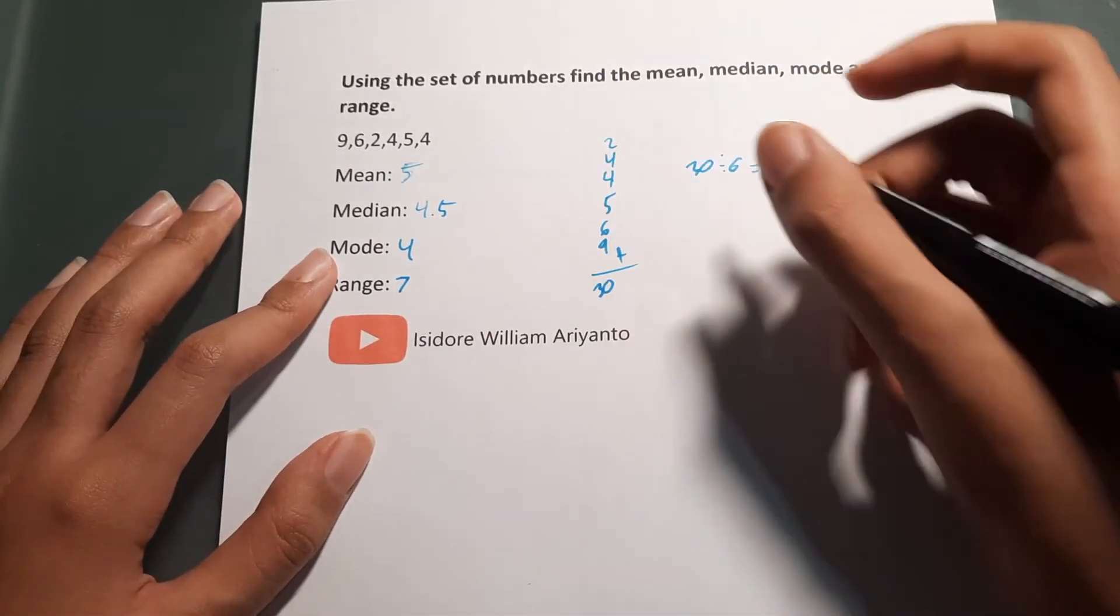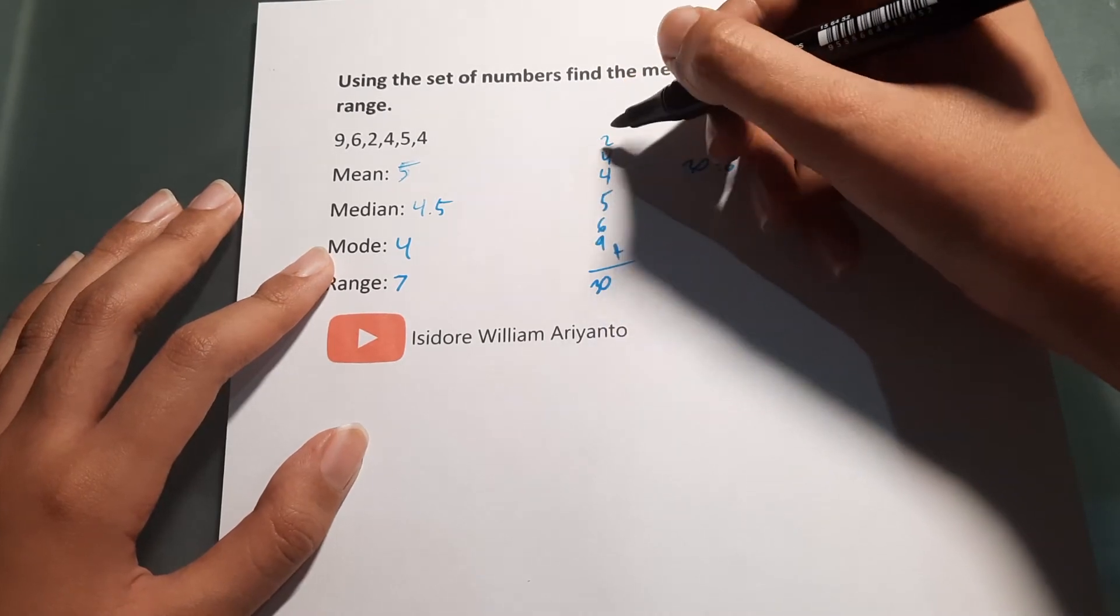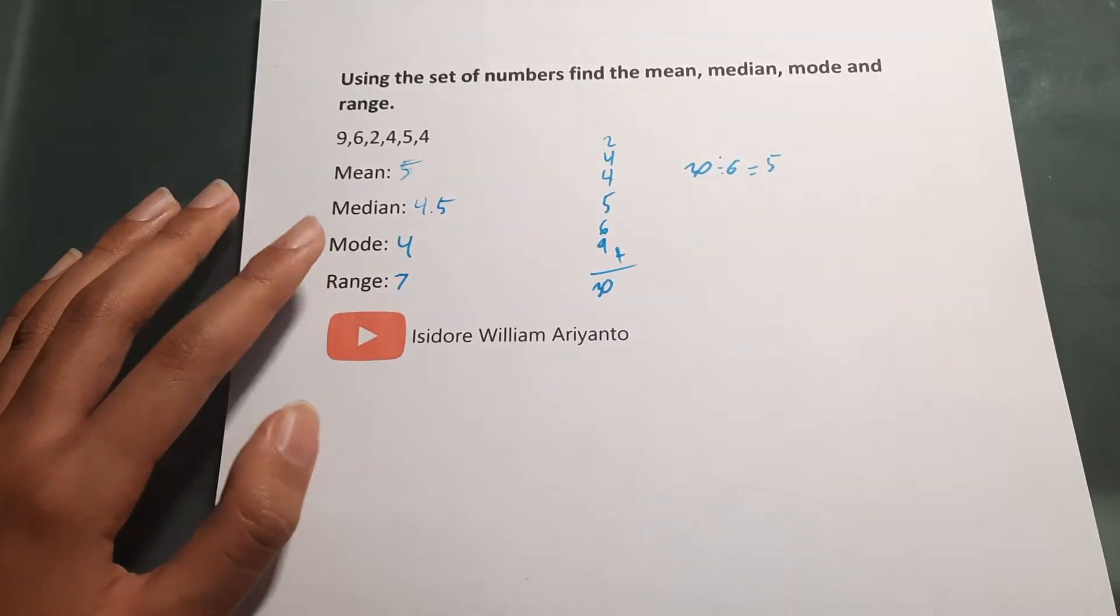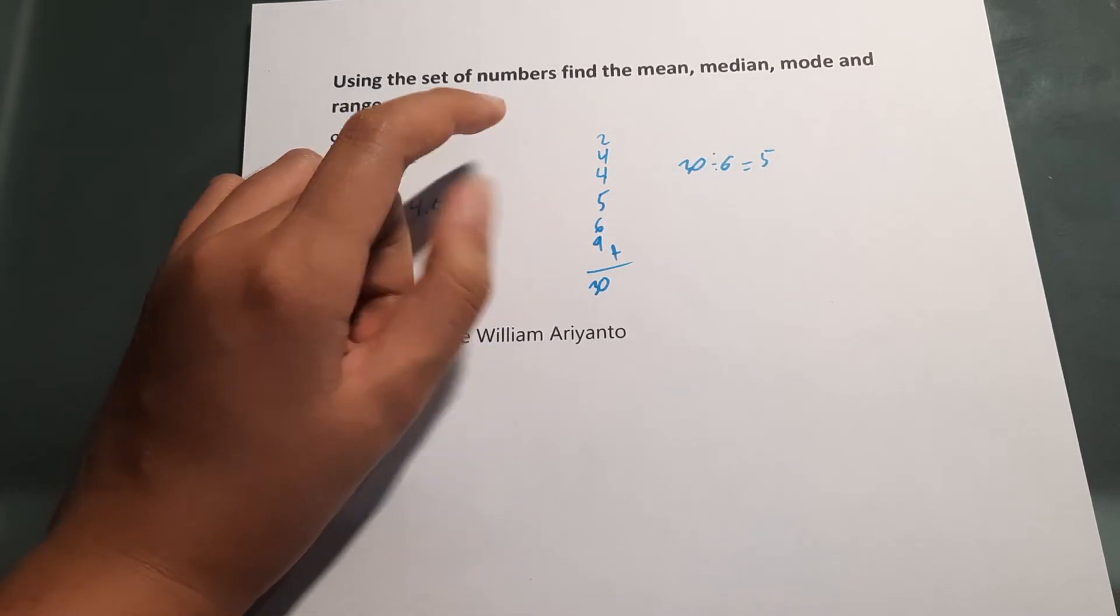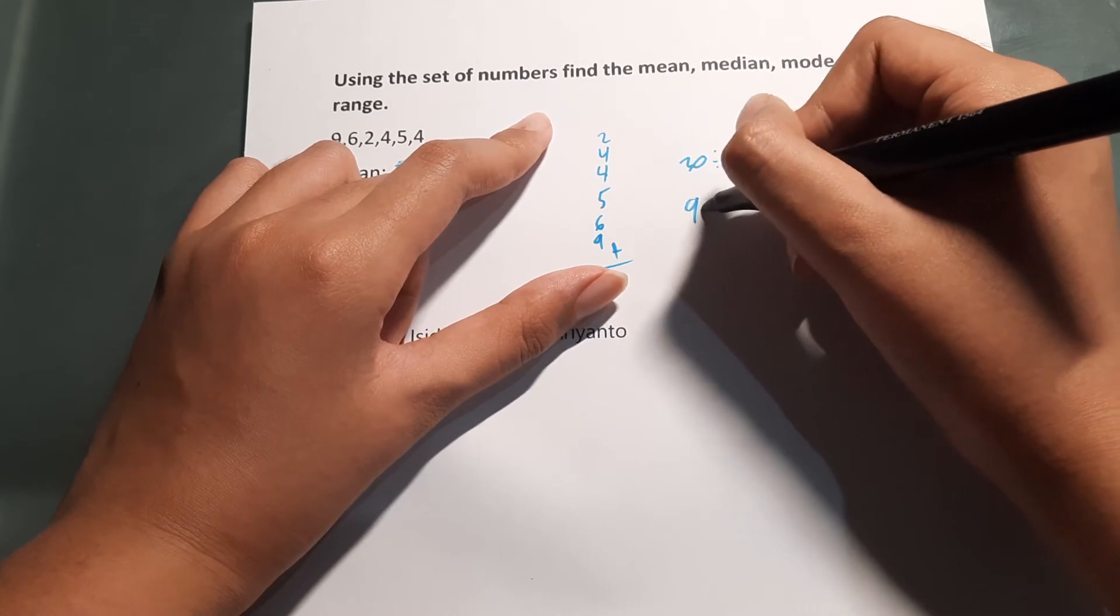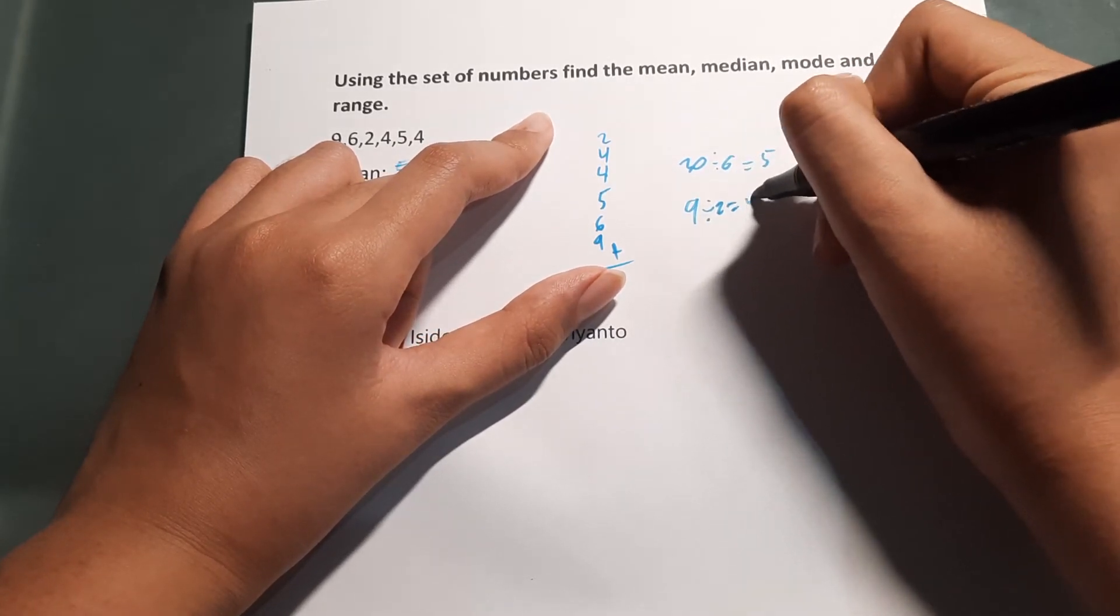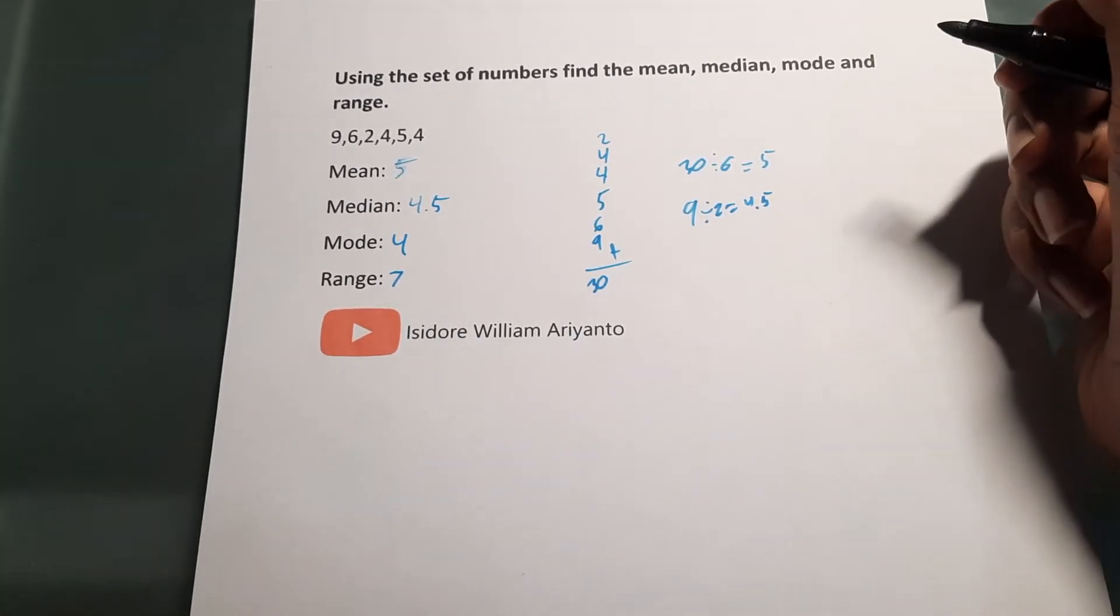The median is you need to find the middle. In this case, there are 2 middle numbers. If there are 2, you need to add them up and then divide by 2. 4 plus 5 is 9, and divided by 2 gives you 4.5. If there is 1, you can just pick that.